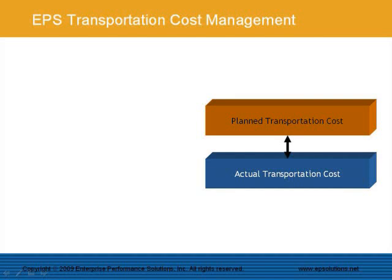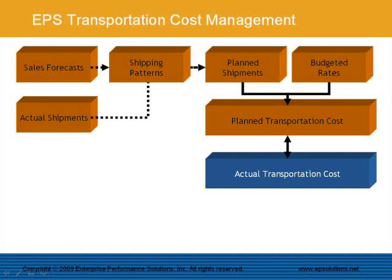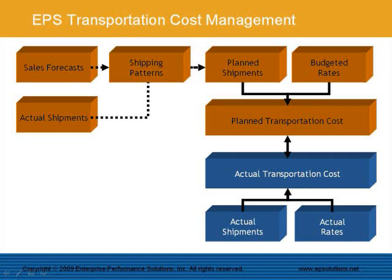The planned transportation cost, which is the benchmark, and the actual transportation cost. A detailed transportation budget is one type of benchmark, in which case a sales forecast is applied to a predetermined set of shipping patterns to arrive at a planned shipment, which is then costed by budgeted transportation rates. Actual transportation costs from prior periods is the other type of benchmark. The benchmark needs to have the same level of detail as the actual side of the module. Transportation cost variances are calculated by transport dimension, keeping all other things equal.